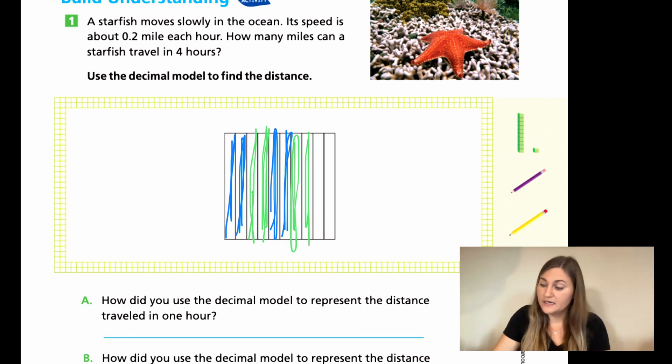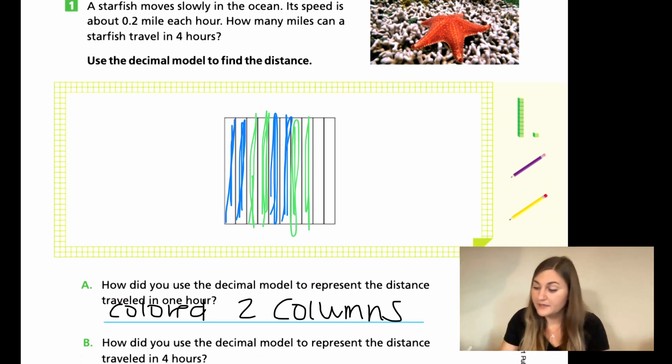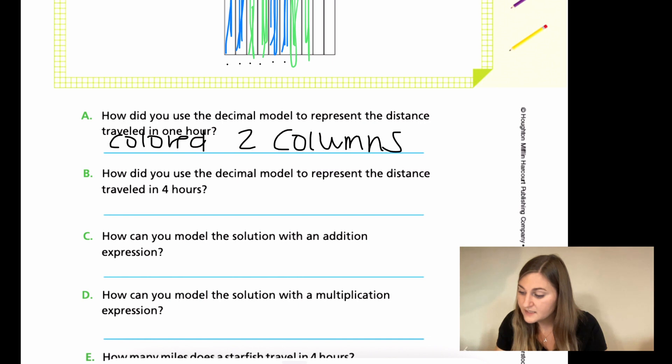So then when it asks us, what did I do to show one hour? I colored two columns. And what did I do to show all four hours? Well, how many are there? There's one, two, three, four, five, six, seven, eight. So for all four, I colored eight of those columns.